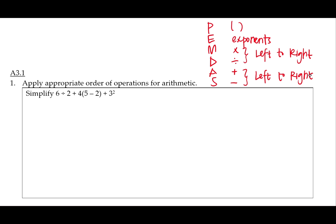So we're going to do our parentheses first. That's the 5 minus 2. So I'm just going to rewrite everything else. And now in the parentheses I'm going to do that first. 5 minus 2 is 3.